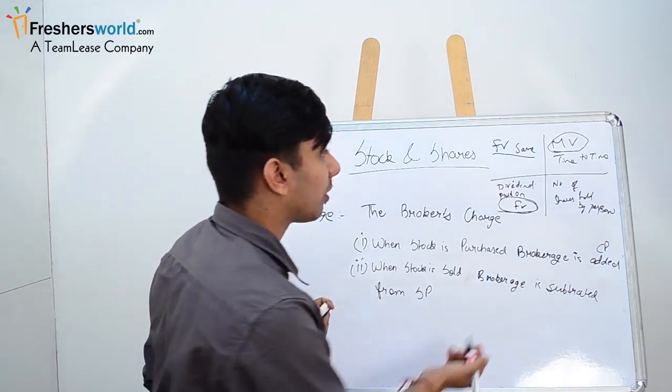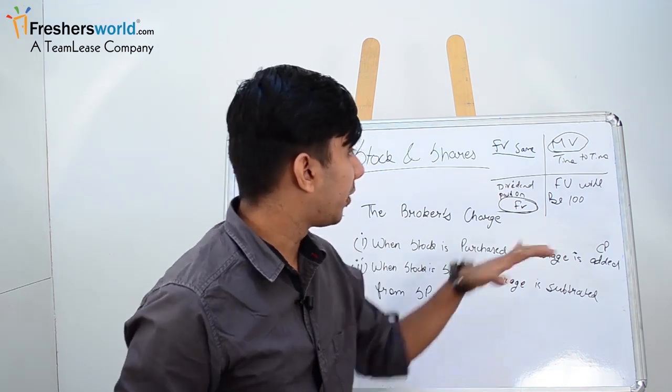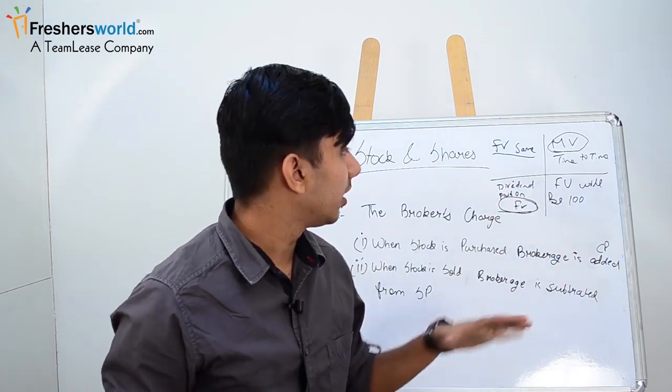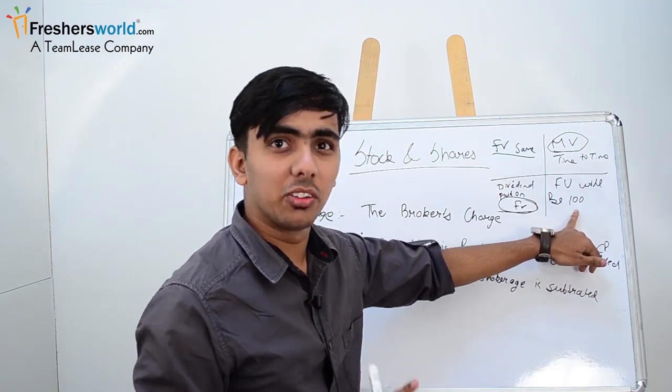Fourth is, if in your question the face value has not been given to you, it will always be 100. You have to suppose it to be 100.